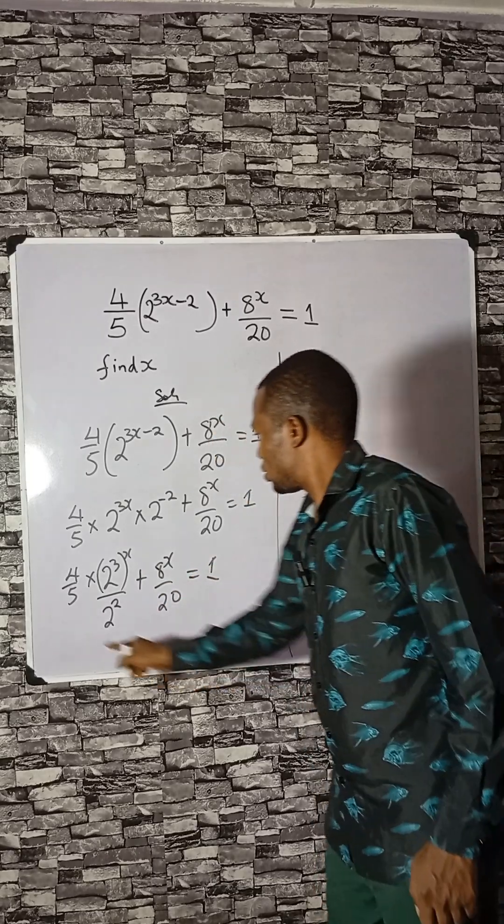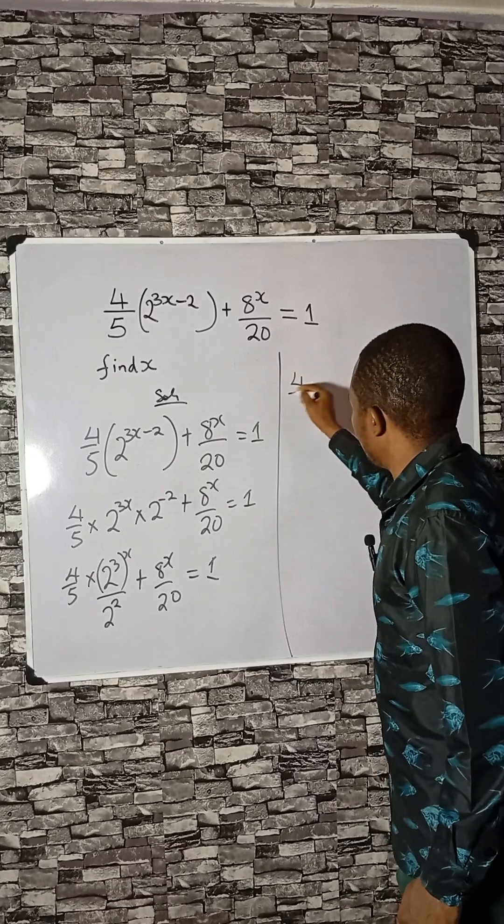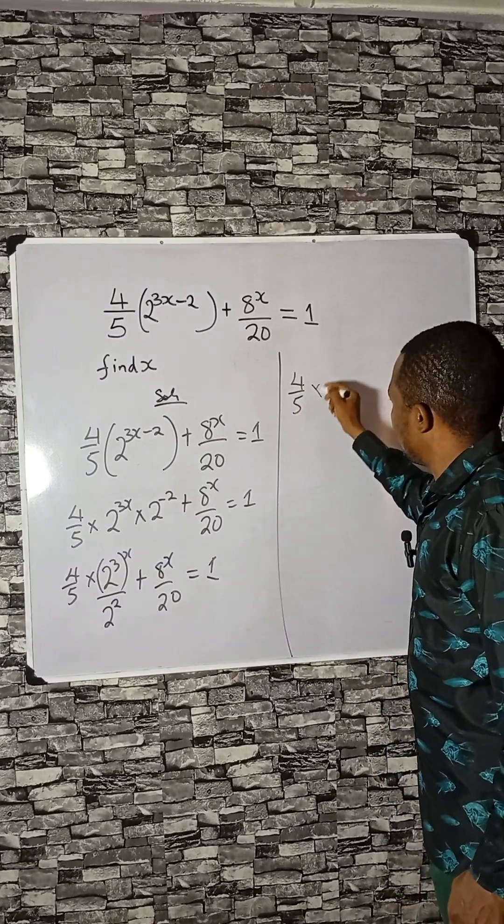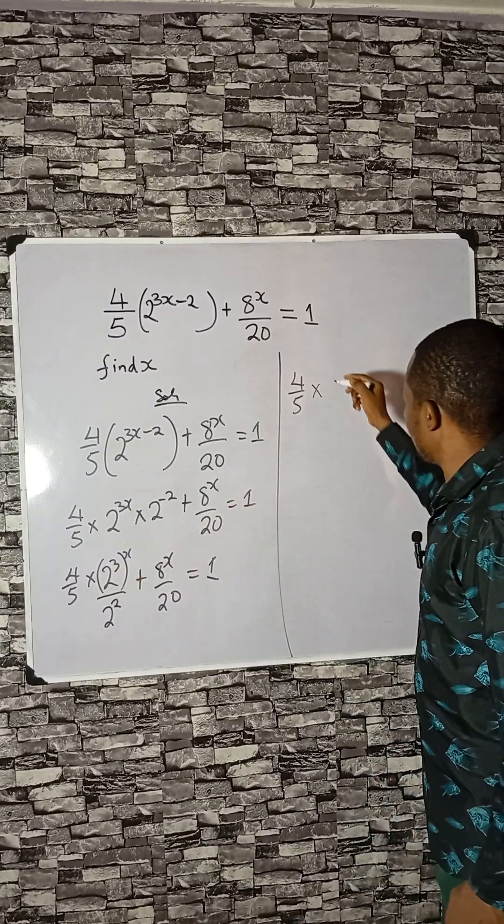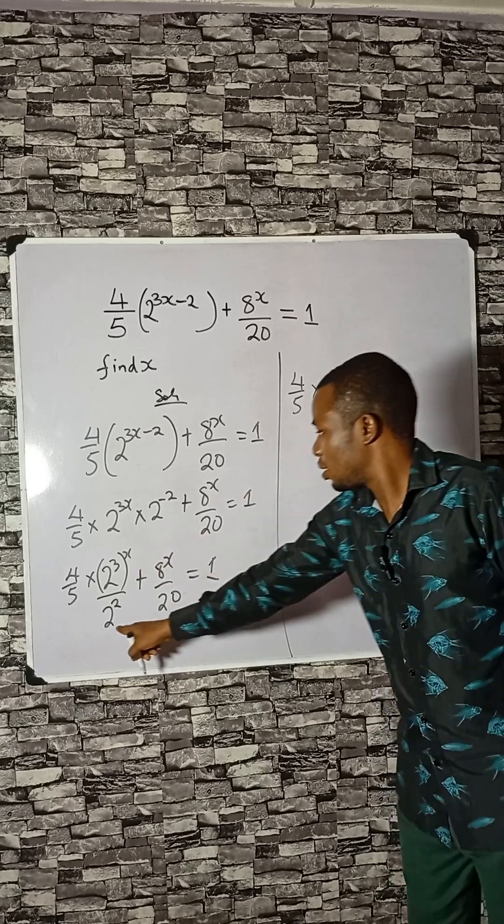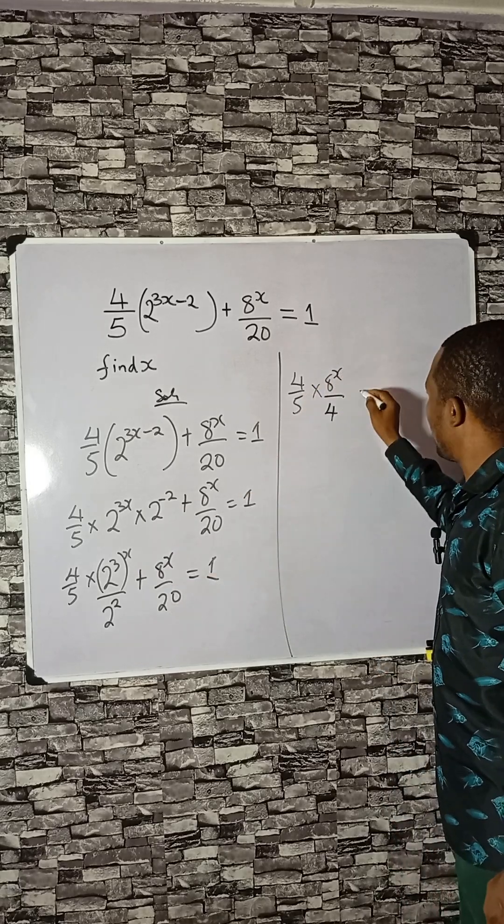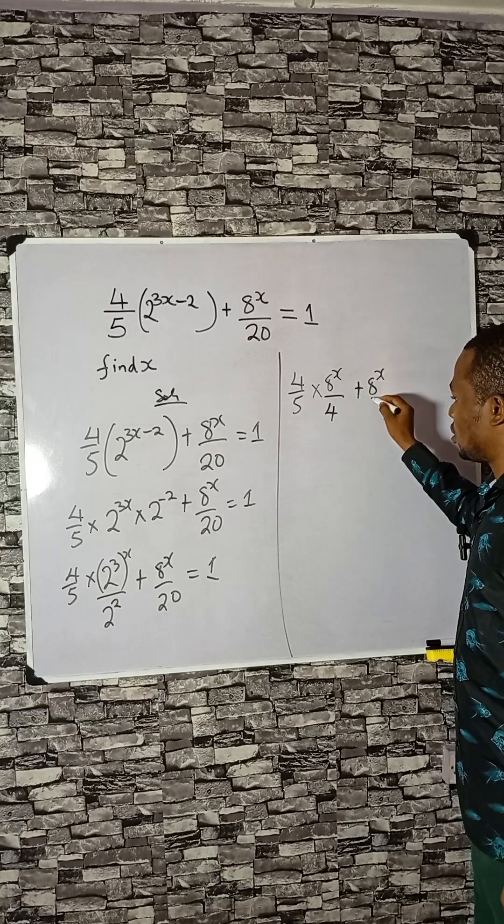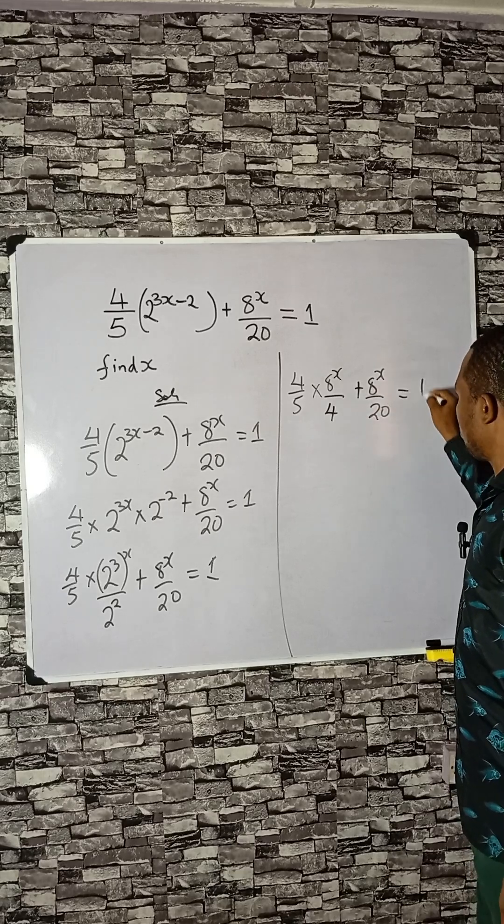Let's look at this. 4 divided by 5 times 2 cubed is 8, then raised to the power x. 8 divided by 4 plus 8x divided by 20 equals to 1.